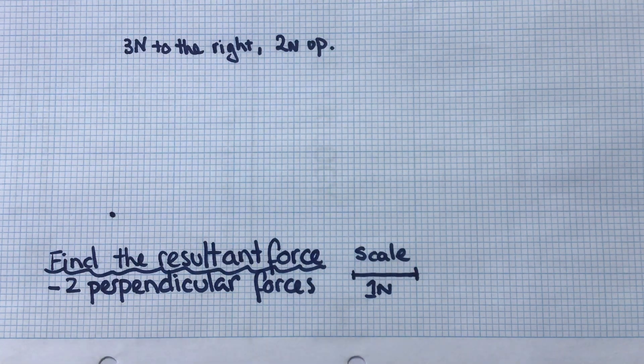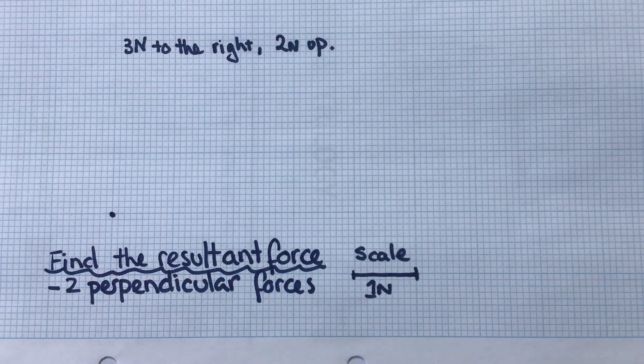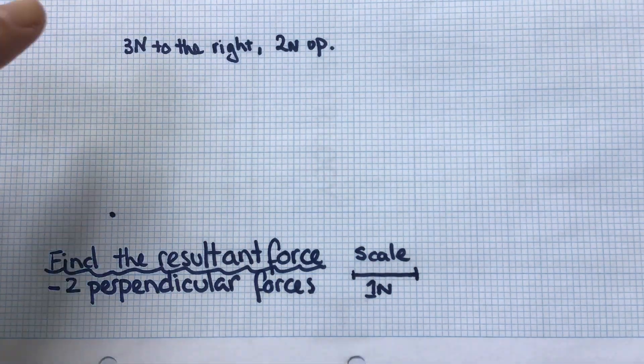We're going to look at how to find the resultant force, which is the overall force when we add together two perpendicular forces—two forces that are at right angles. The forces we're going to use are 3 newtons to the right and 2 newtons acting up the page.